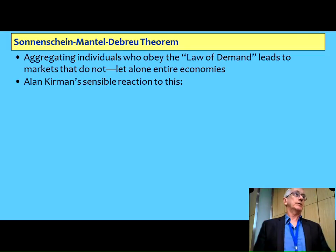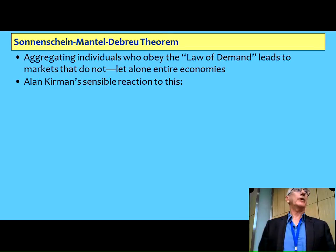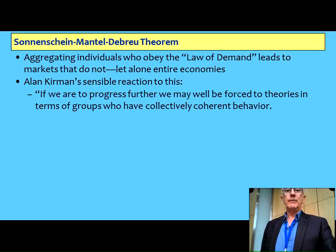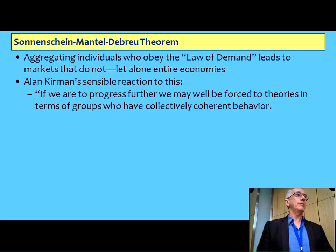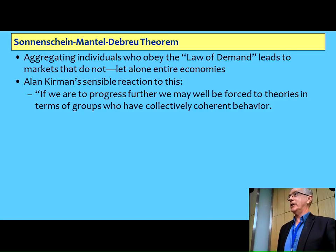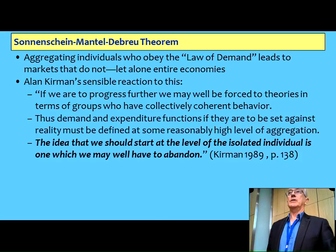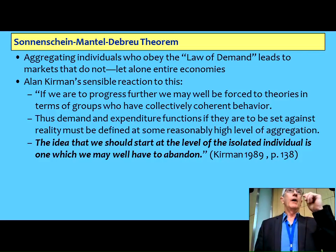Most economists don't even know this literature, and those that do have a pretty silly reaction to it — rationalise, assume, et cetera. The best reaction, I think, came from Alan Kirman. He said that if we're going to take this seriously, it means we simply have to work at a higher level of aggregation. We can't lump everybody into one barrel, but we can lump all wealthy people in one barrel, all poor in another, all bankers in a third. He said the idea that we have to start from an isolated individual may be an idea we have to abandon. And that's what we should have done when this theorem was realised 40 years ago.